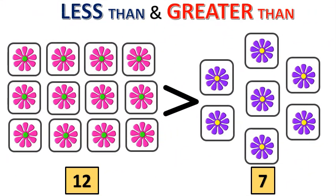Here, to understand in a simple way, the number of pink flowers are more when compared to the purple ones. So greater than is towards the pink ones.